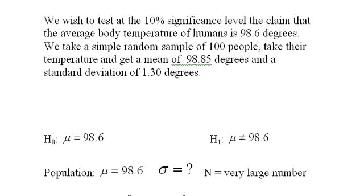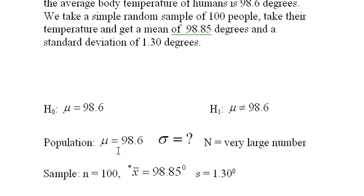So here what we have is our population parameters. The mean we're assuming is 98.6, we don't know the standard deviation of the population but we know the number of human beings is very large in the billions. Our sample is 100 and our X bar, I put a little asterisk by our X bar to indicate this is the one we got, 98.85 degrees with the standard deviation of 1.3 degrees.